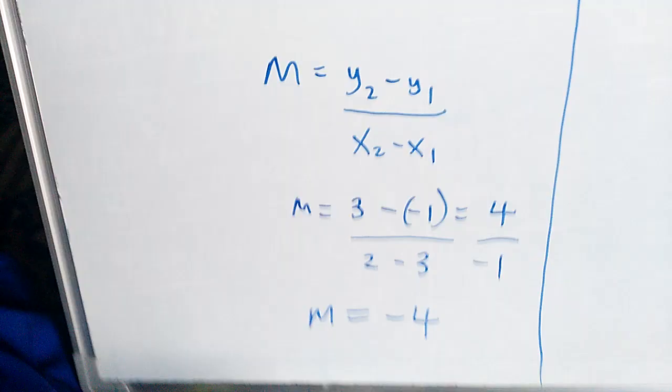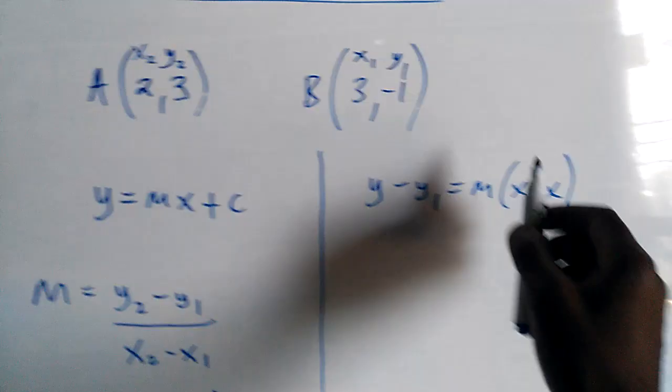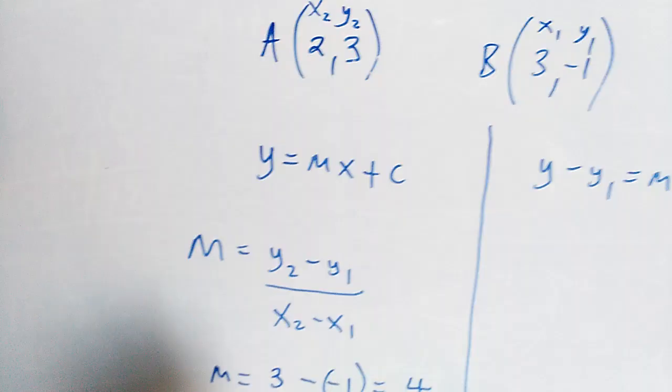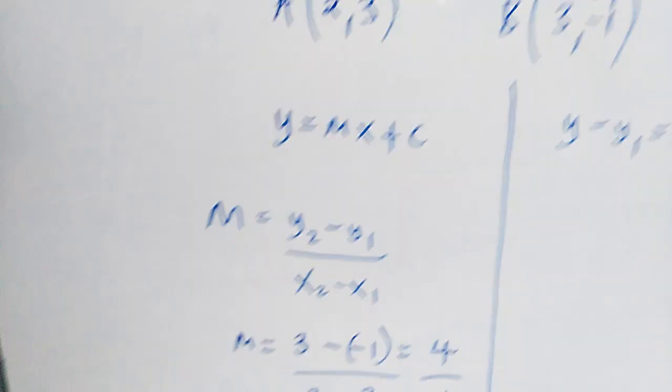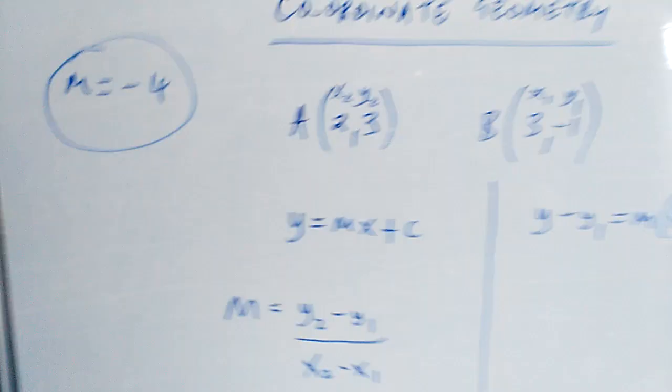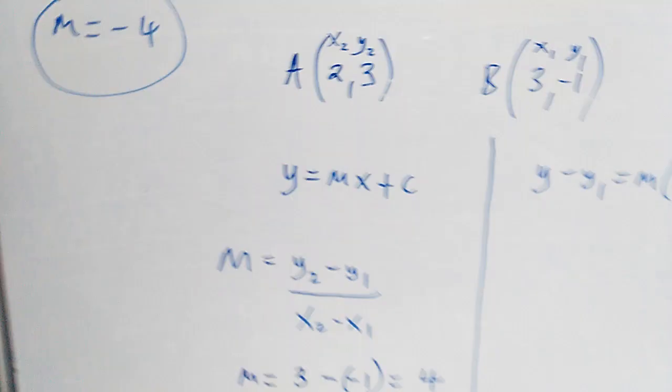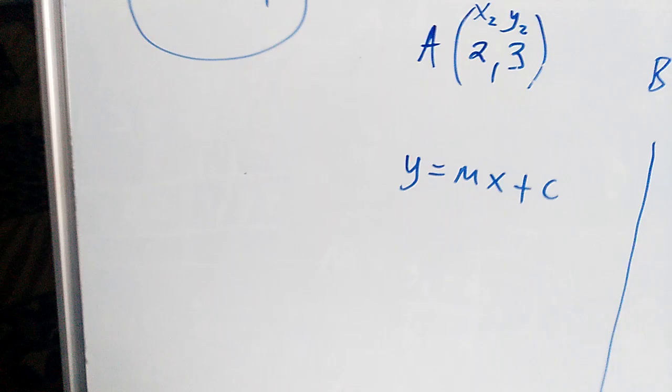Now that we have the m, we have x, we have y, we have m. We can therefore get the equation of the line using either this one or this one. We have m as negative 4. Using any of the coordinates, either this A or B, we are joining these two. Either this or this can help us get the equation of the line. So let's try. We'll try on both sides.